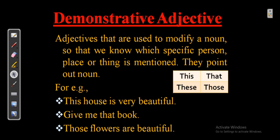Demonstrative adjective is used to demonstrate or point to a particular place, person, or thing — so that we know which specific person, place, or thing is mentioned. 'This,' 'that,' 'these,' and 'those' are demonstrative adjectives. For example: 'This house is very beautiful,' 'Give me that book,' and 'Those flowers are beautiful.'